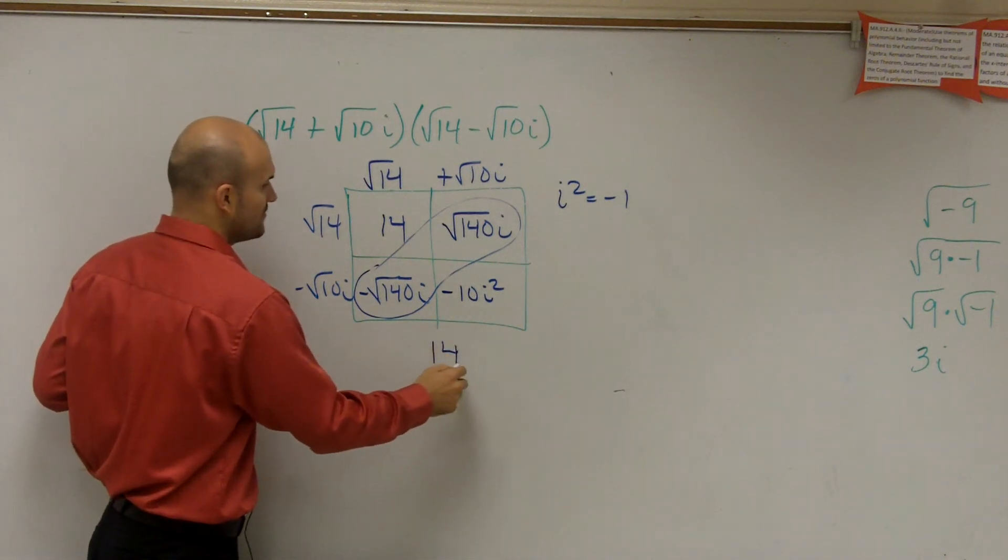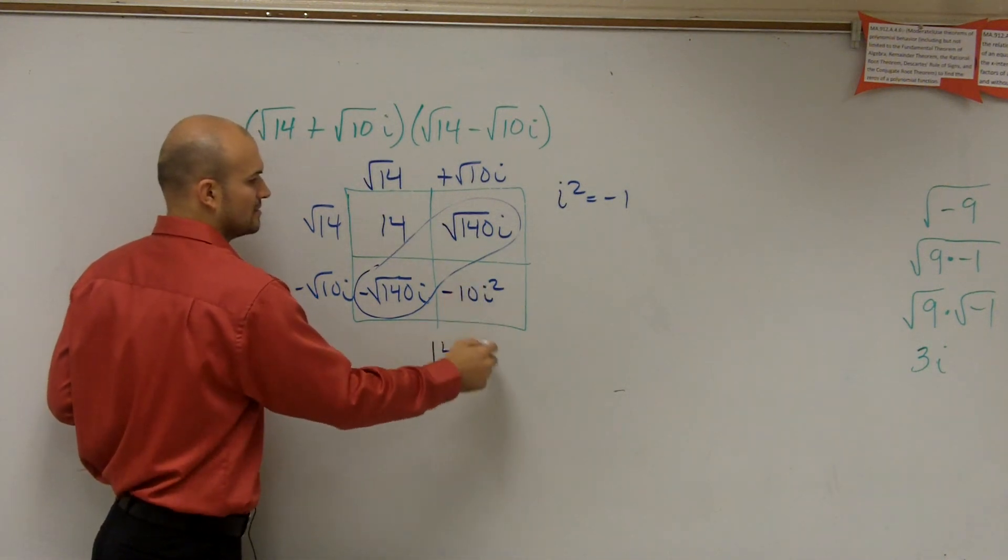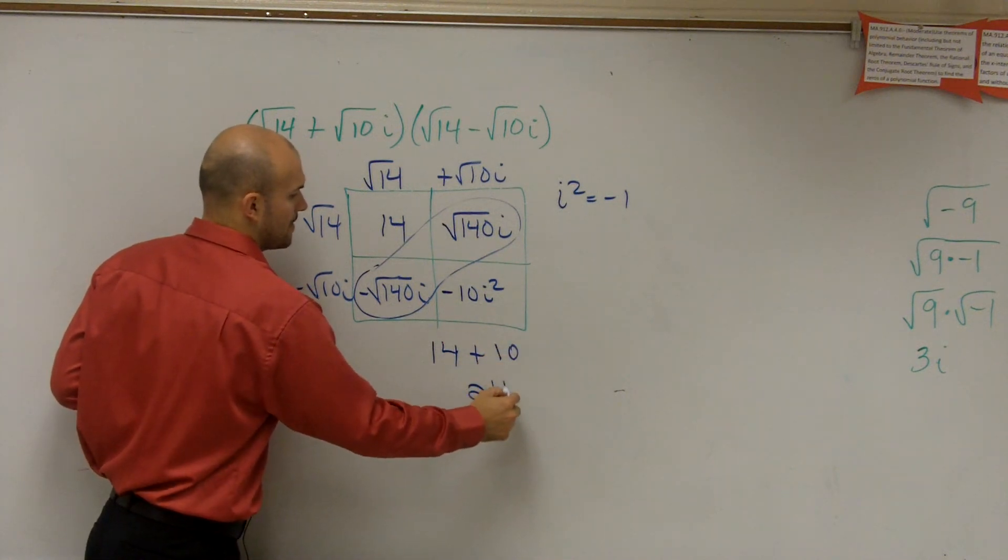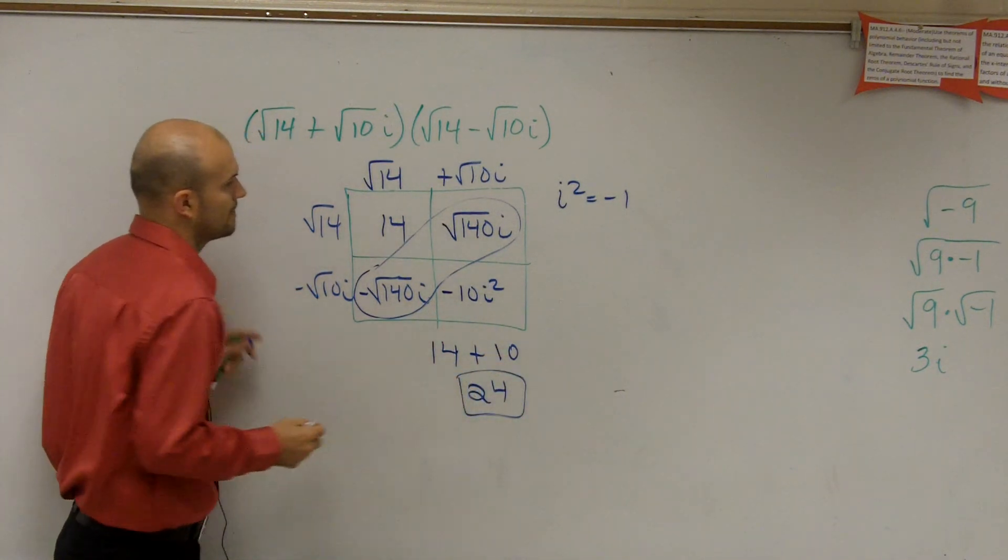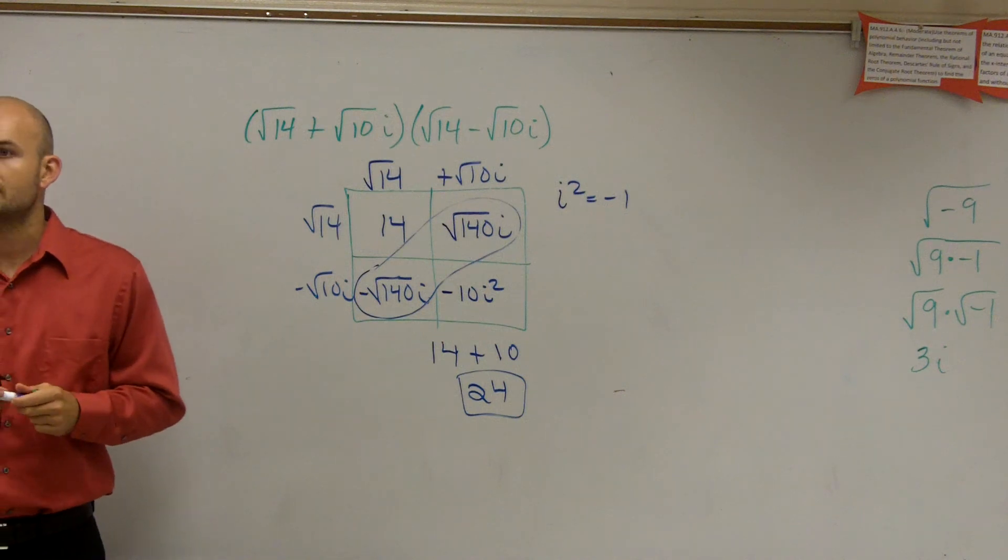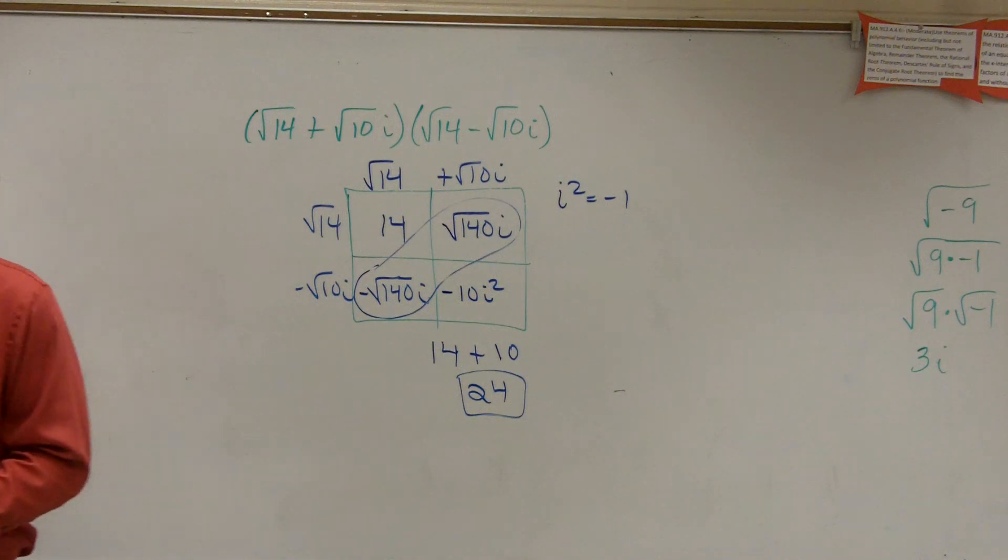So I have 14 plus, this just becomes 10, which is 24. And there we go. That's it. Final answer. Okay? So just use your diagrams to help you out get those.